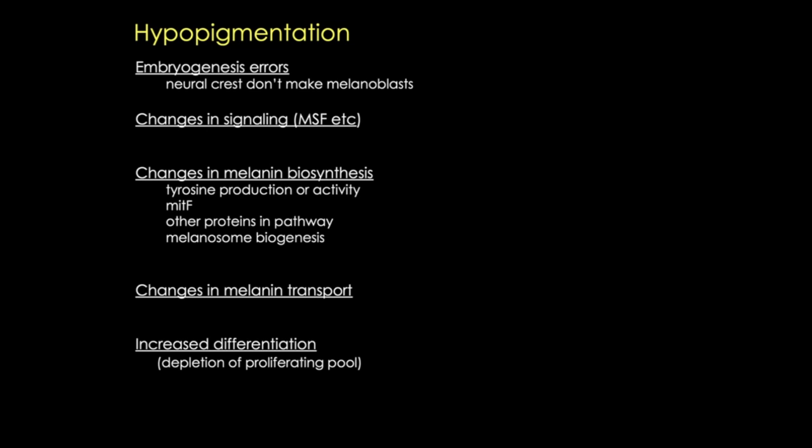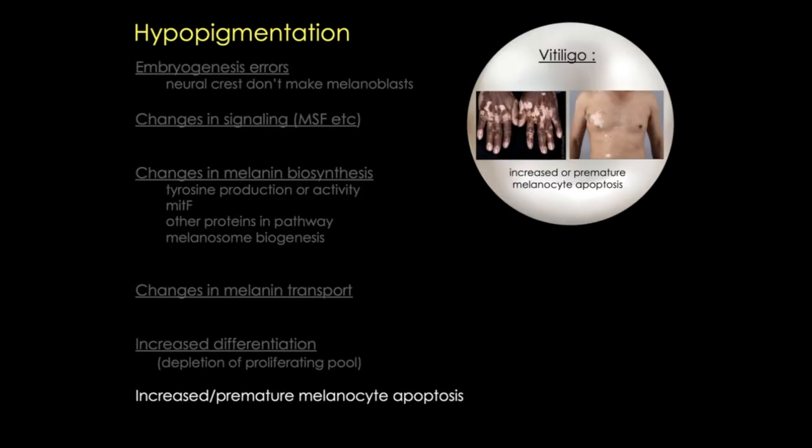There can also be premature loss of melanocytes. The classic example is vitiligo, which presents with well-defined milky white patches of skin—called leukoderma. Here I've shown two examples: one in dark skin on the left and one in lighter skin on the right.